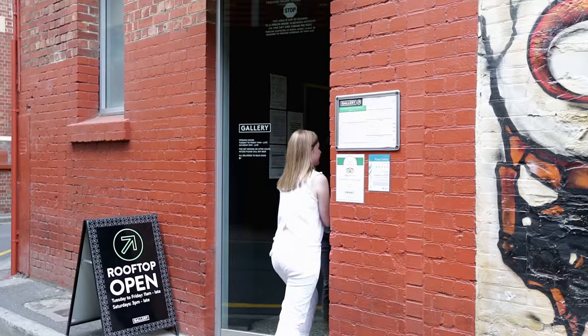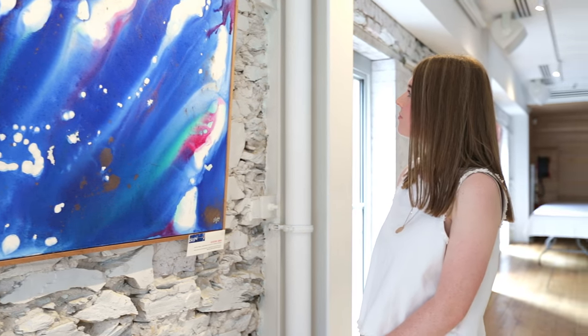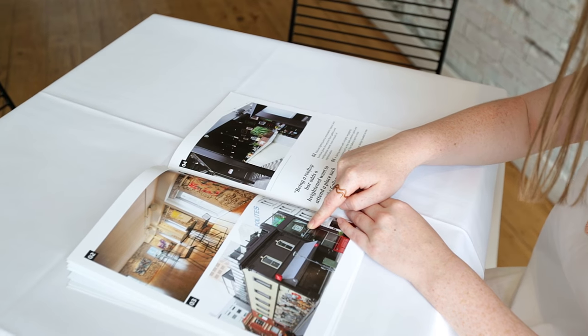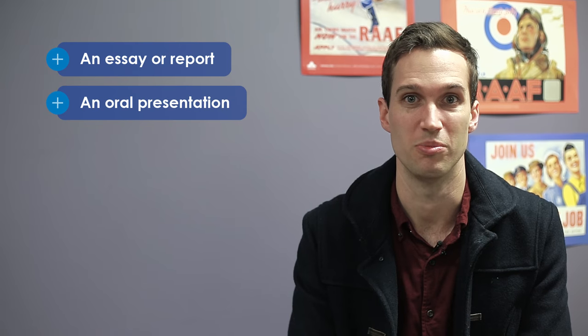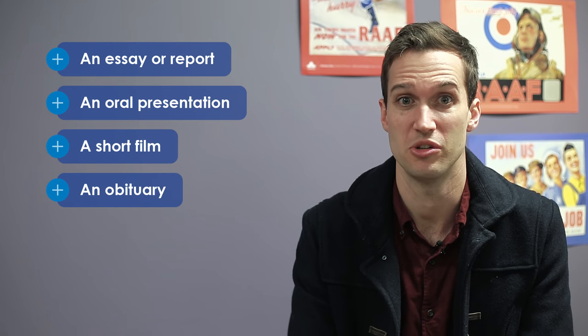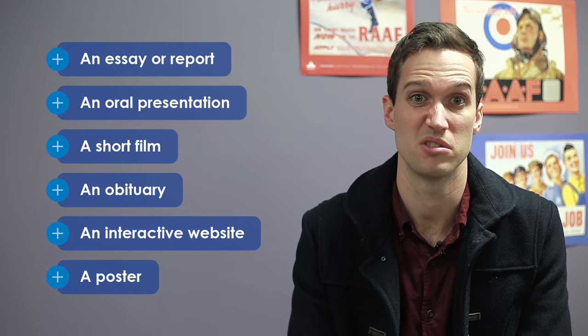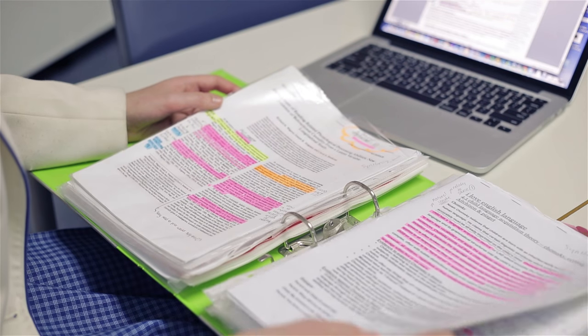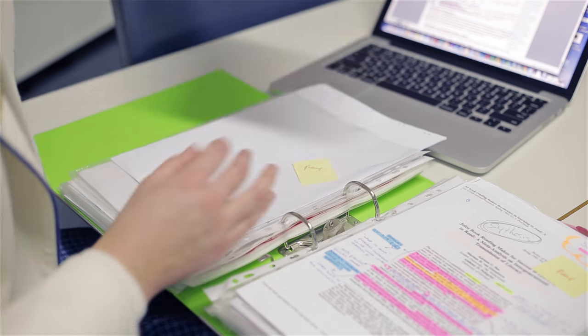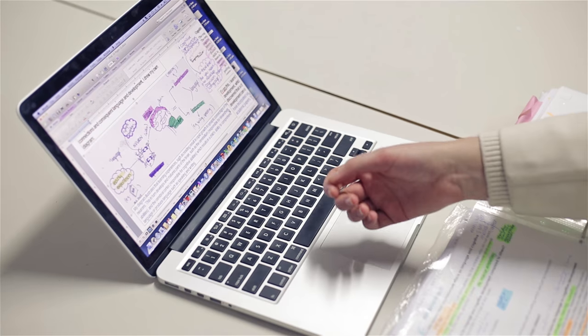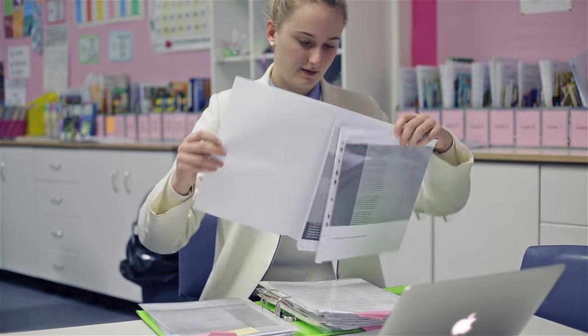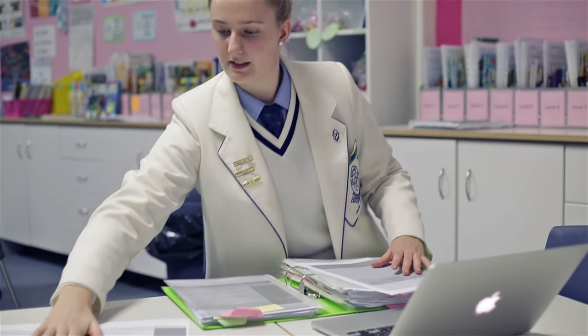The research outcome is the answer to your research question. It's where you show your key findings and substantiate them with evidence and examples from your research. You can choose the way you wish to show these findings — your research outcome could be written, oral or multimodal. For example, if you researched the life of a famous artist, you could present your outcome as an essay or report, an oral presentation, a short film, an obituary, an interactive website, a poster, plus many other ways. Just presenting what you've learnt is not enough — you need to prove your facts with evidence from your research. This is called substantiation, which means being able to show someone else where the ideas have come from. Being able to reference your information, ideas and material is really important. Speak to your teacher about how to do this well.